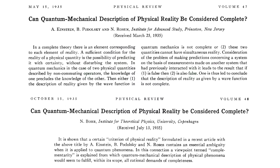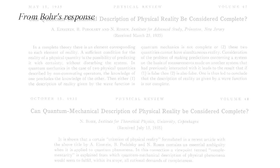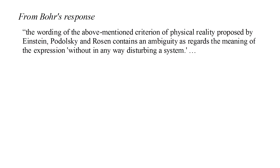A few months later, Niels Bohr published a response, under the same title, in which he defended quantum mechanics and came down on the radical revision side of the fence. He argued that the wording of the above-mentioned criterion of physical reality proposed by Einstein, Podolsky, and Rosen contains an ambiguity as regards the meaning of the expression without in any way disturbing a system. By the end of this video, we'll hopefully have a good understanding of this ambiguity.